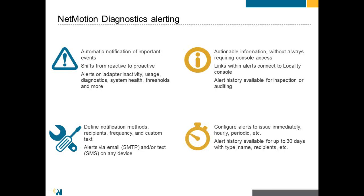A typical user might just reboot and the help desk never knows about it. This is a nice way to tell them: if you have a problem, push this button and know that IT is going to get the data to work on it. With alerting, we've also added several additional alerts, such as cellular usage. One feature requested quite a bit in the last year is: tell me when a cellular data card goes over a certain usage in 24 hours.